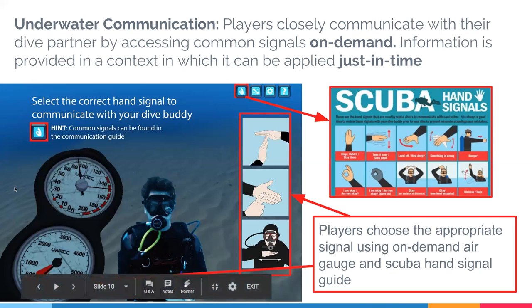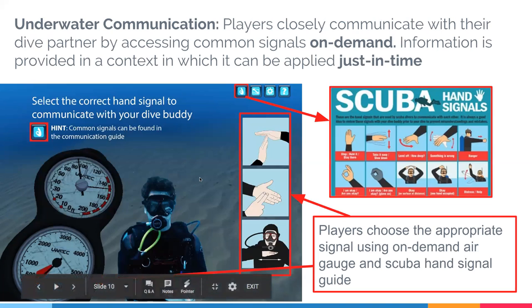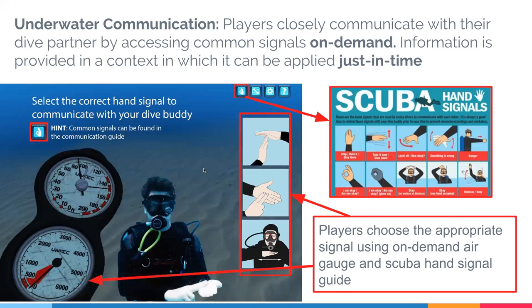Looking at the mock-up, you can see your depth gauge and air level at the bottom of the screen. The diver must communicate the correct response — in this case, they're totally out of air, which is dangerous, and must show the correct signal. This essentially serves as an assessment. Like the other simulation I referenced, this could collect data on wrong and correct decisions — all done in a safe environment rather than a genuinely dangerous underwater situation.